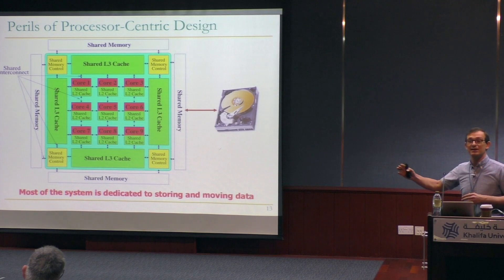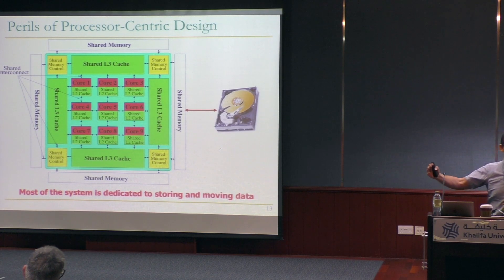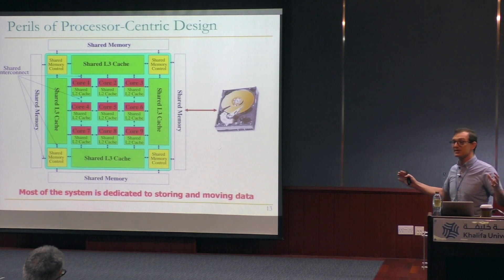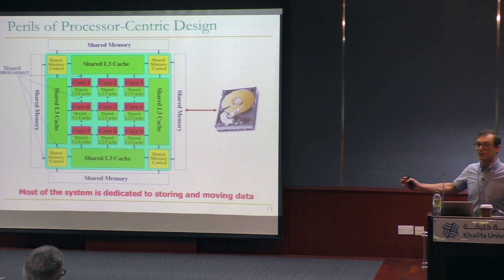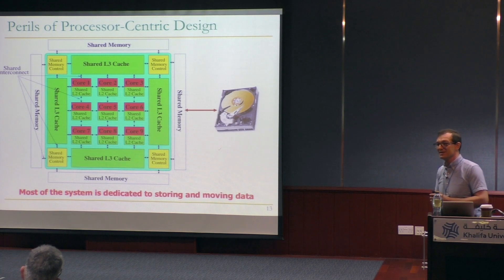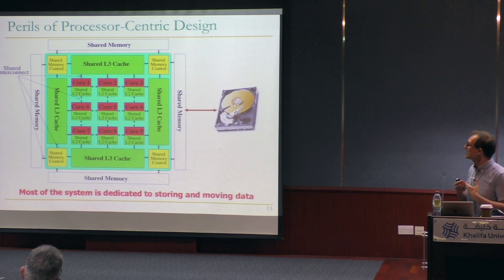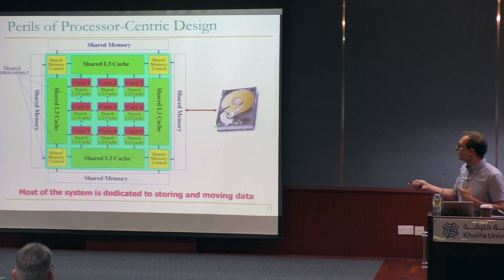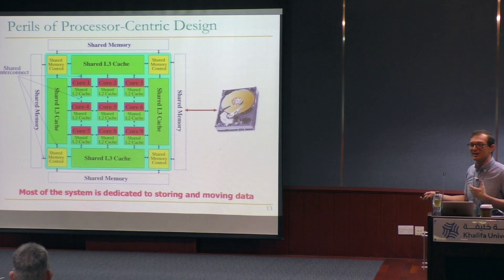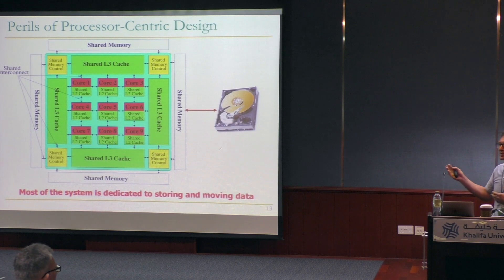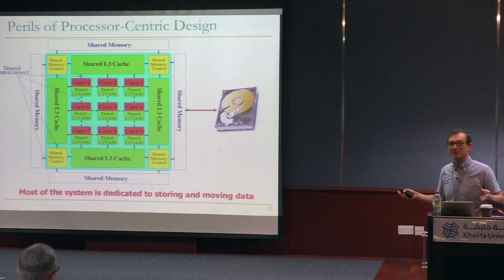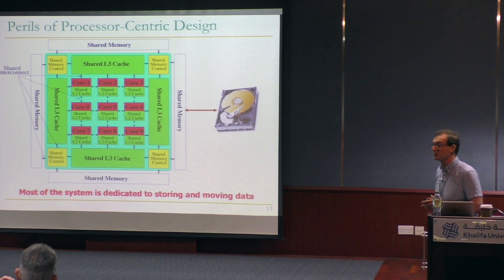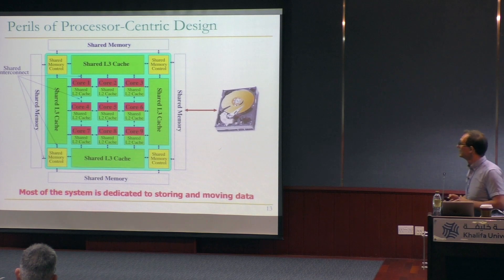People are designing accelerators today for AI. Most of them are buffers, interconnect, and memory — most of the node is still dedicated to moving and storing data. It's good to take a step back and think: we call these things computing devices, but most of the resources are not there for computation. Most resources are there for data storage and moving.